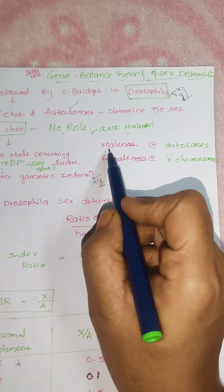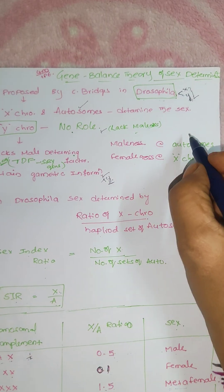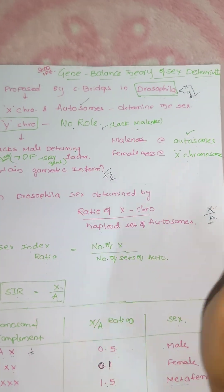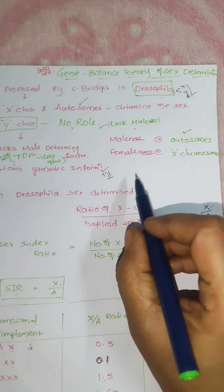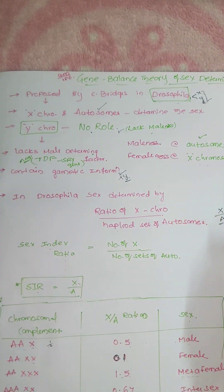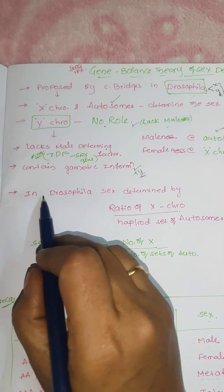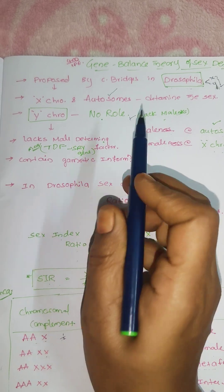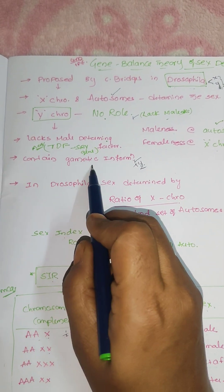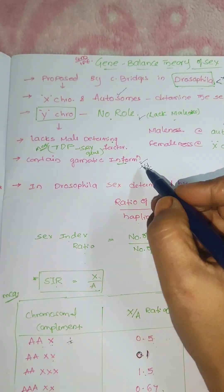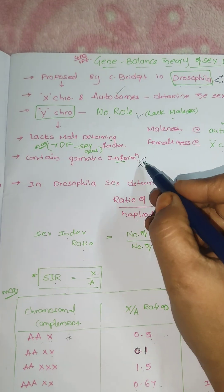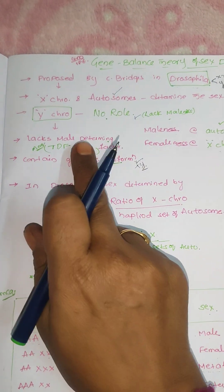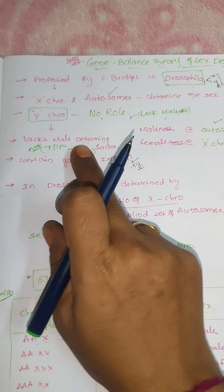Generally, the maleness is caused by the autosomes in Drosophila, not Y. Femaleness as usual by the X chromosome. So here the Y chromosome lacks maleness and also it contains the gametic information that is X and Y. The gametic information is there but determining factor is lacking.